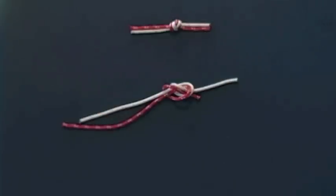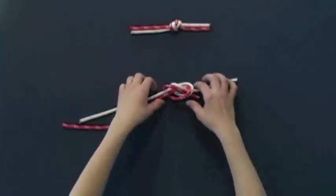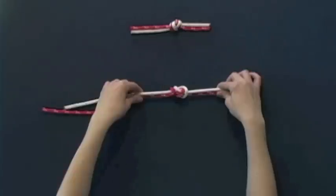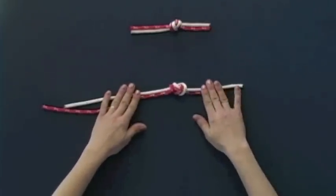Then you will pull the knot tight. This is a completed water knot. You can use this to replace the double overhand knot.